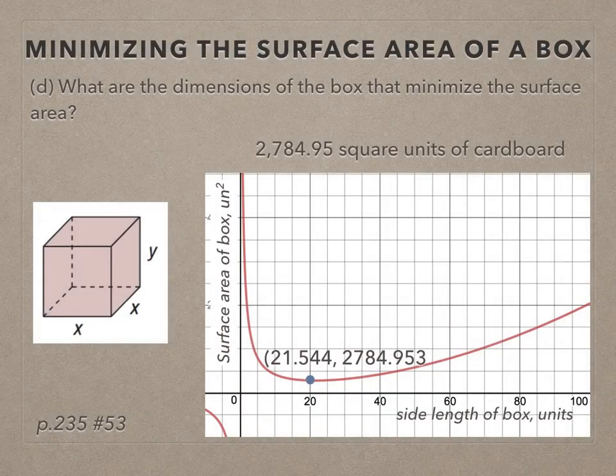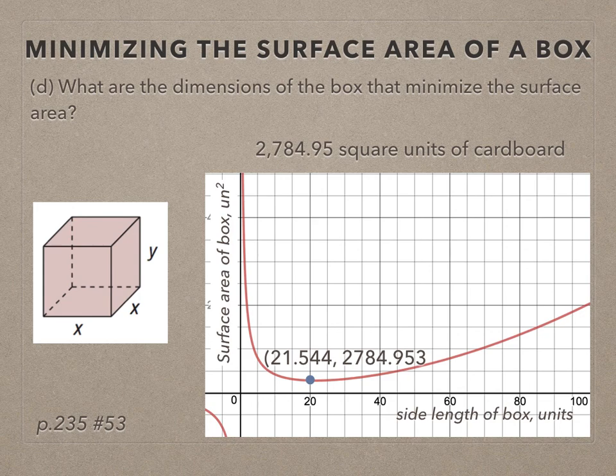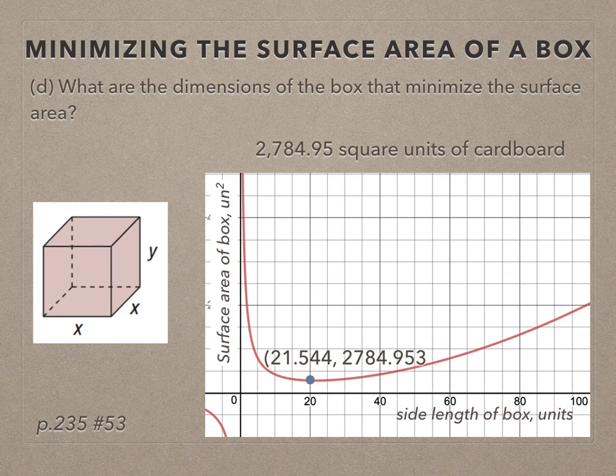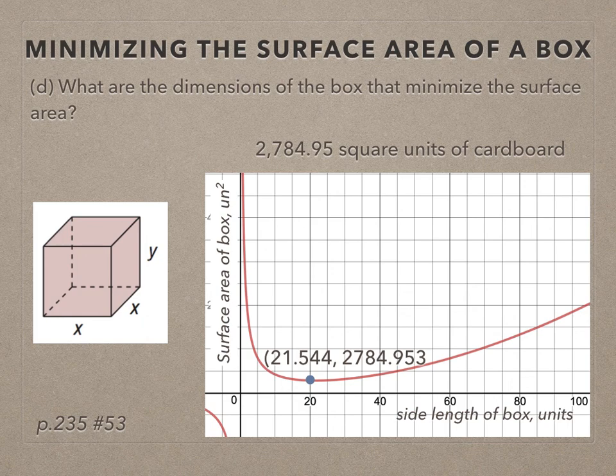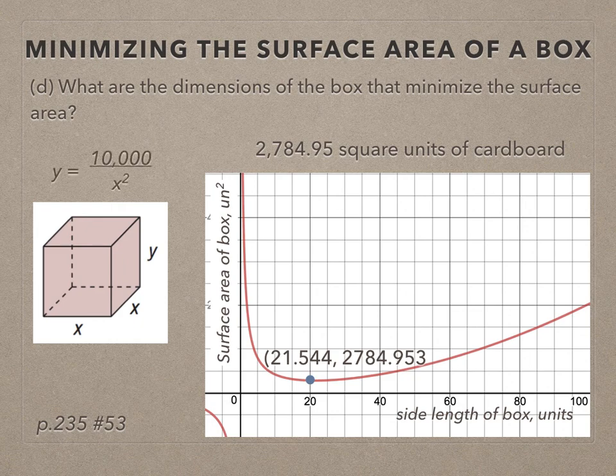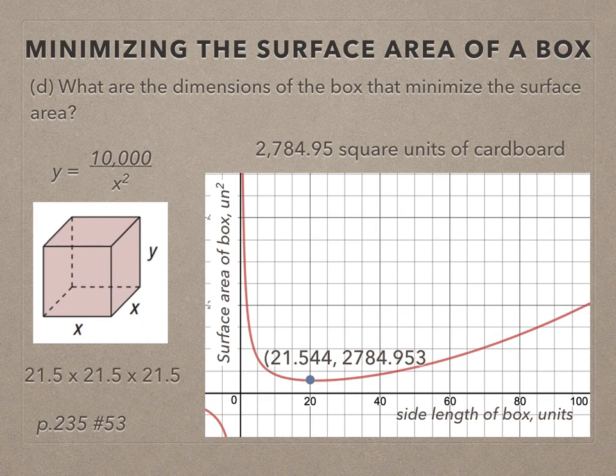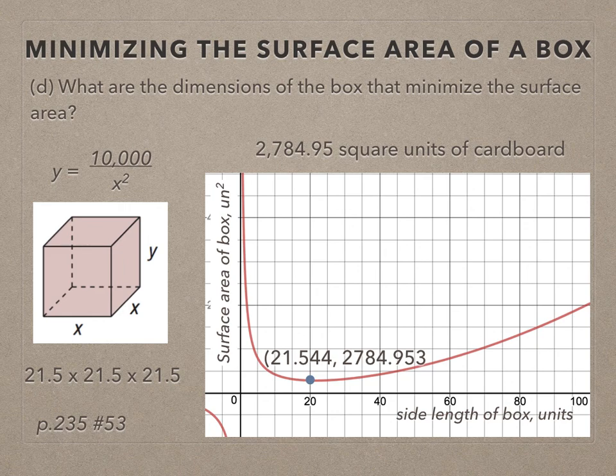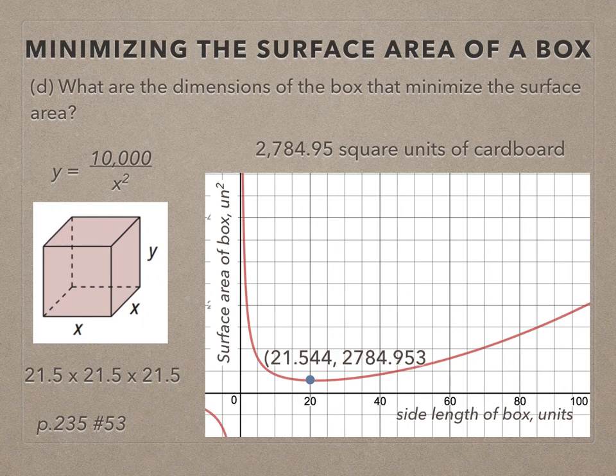Now part d, what are the dimensions of the box that minimize the surface area? The dimensions of the box, I have definitely my x coordinate, my x times x, but this box is x by x by y. I know my x is 21.5 by 21.5, but that expression that we had for y comes in handy. So I can just take a calculator and divide 10,000 by my x coordinate squared. What's interesting about this problem is the dimensions of the box that minimize the surface area are 21.5 by 21.5 by 21.5. That tells you that the box that would be designed should be a cube.